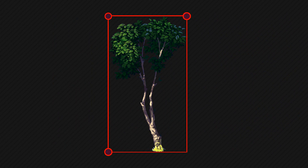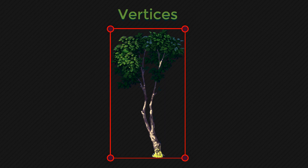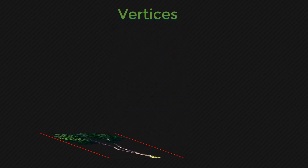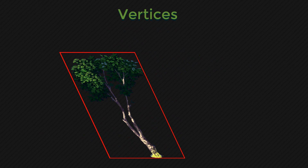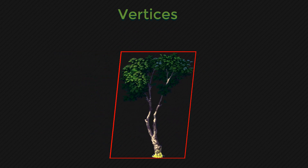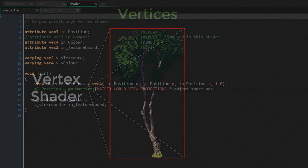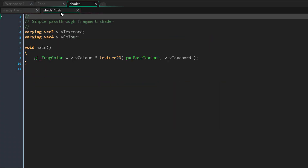This rectangle has four corners or four vertices. These vertices control the shape of the rectangle and ultimately how the image is rendered. So we can modify these vertices using a vertex shader. If you've ever created a shader in GameMaker you'll know that there's a vertex shader and a fragment shader.